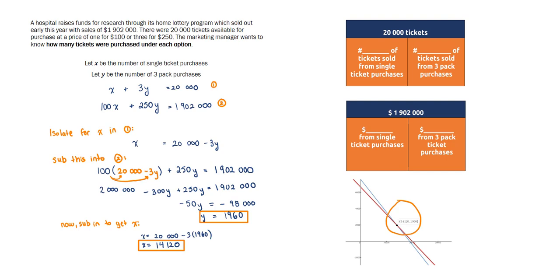Now we may have solved for x and y, but let's talk about what it is that we just found and let's make sure we're answering the question that was asked. The value of y that we found is actually the number of three-packs that were purchased, and what we found for x was the number of single tickets purchased.